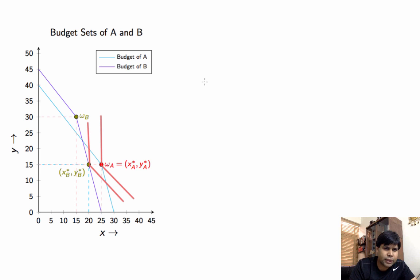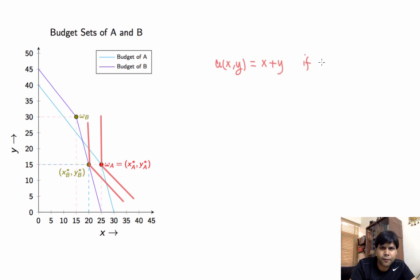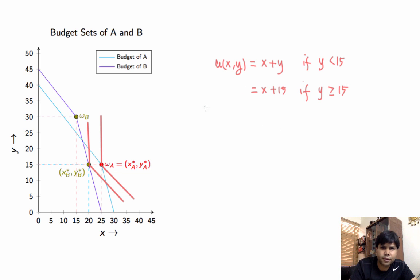One utility function that can give us such ICs is U(X,Y) = X + Y, when Y is less than 15, and X + 15 when Y is greater than or equal to 15. In a more compact form, this utility function is U(X,Y) = min(X + Y, X + 15). This gives us a slope less than the slope of the budget line in the relevant region.